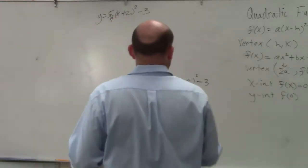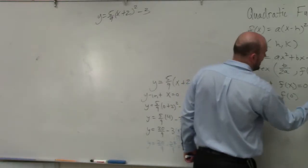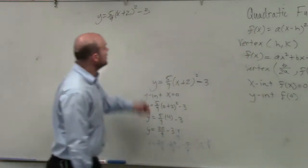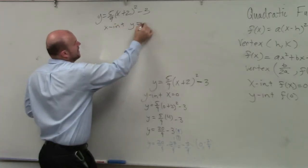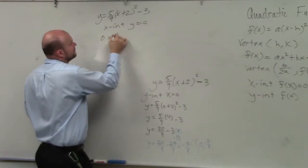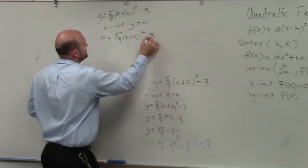F of x, or in this case, y should equal 0, right? F of x equals 0, or y equals 0. So if I want to find the x-intercept, y equals 0. So I place 0 equals 5/9ths x plus 2 squared minus 3.